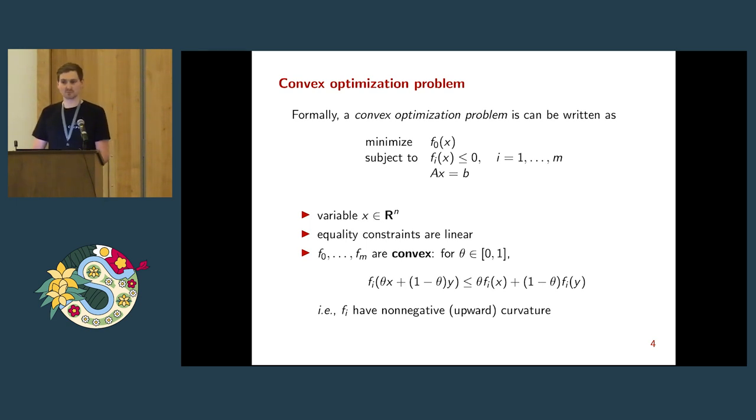More generally, a convex optimization problem is one where we minimize a function f_0 here, and of course it has to be a convex function, an upward sloping function. There can also be constraints. For example, we can have inequality constraints where we say some other convex function of x, our optimization variable, must be less than or equal to zero. We can also have equality constraints, but those need to be linear or affine. So we have Ax equals b.